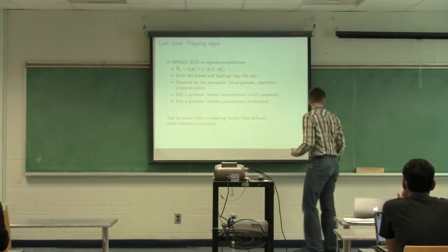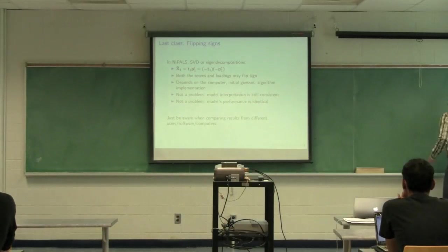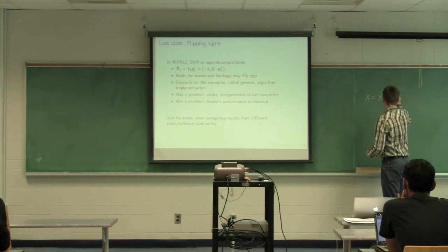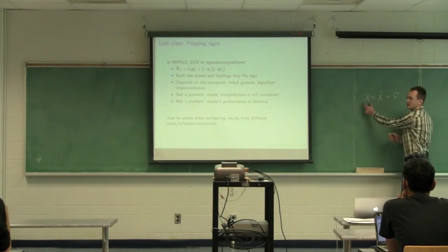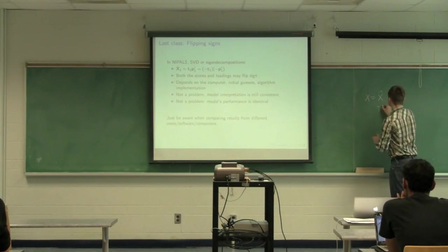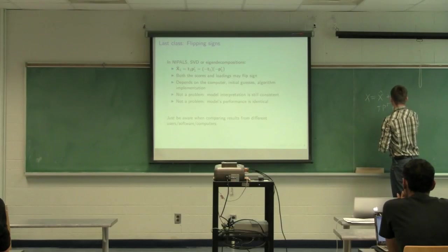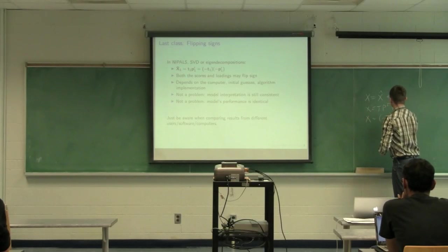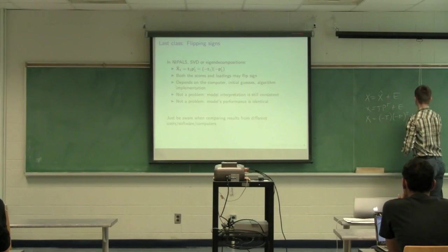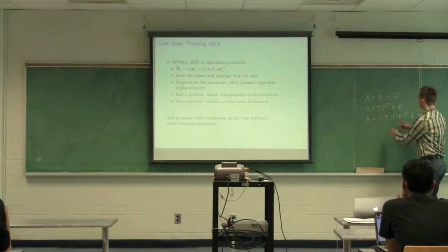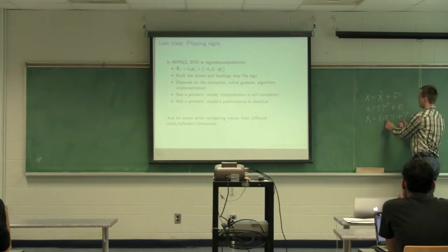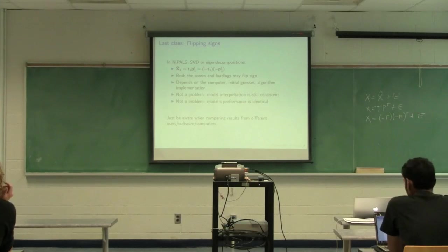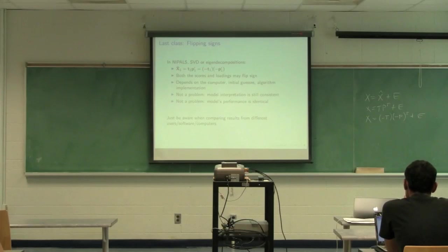And then by extension, the next step after you've got x hat is to get your residual. So x is x hat plus residual. So x is the data we measure. x hat is equal to t p transpose. But we can also write that as minus t minus p transpose. Or you can even flip the signs of certain columns in t and p. And you'll still get a consistent model. So sign flipping is not a big deal. So don't be worried about it.